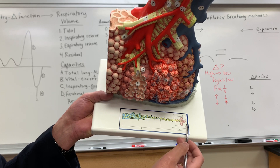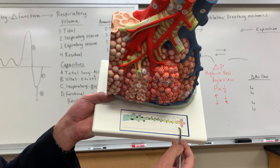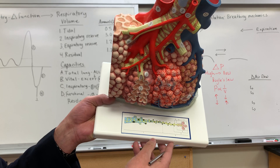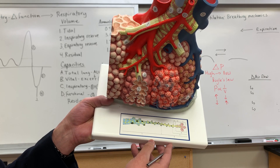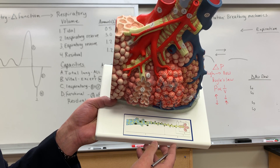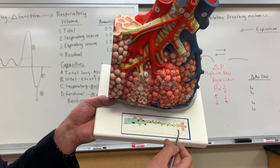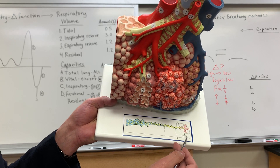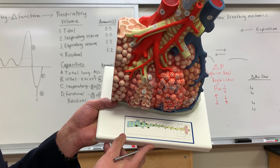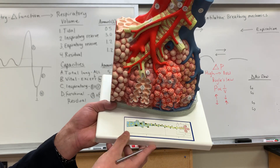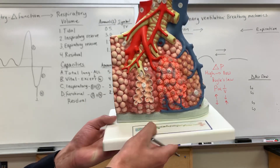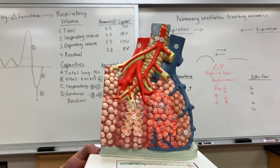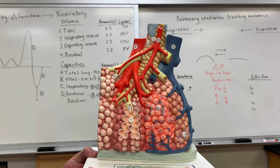Number four is known as the pulmonary acini — this is the fundamental unit of the lung. And then number three is the pulmonary lobule.